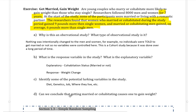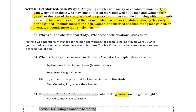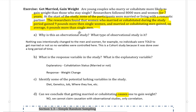Can we conclude that getting married or cohabitating causes one to gain weight? The answer is a concrete no — we cannot claim causation with observational studies. We can only claim correlation. All we can say is that there's a connection between cohabitation status and the amount of weight gained or lost. If they had controlled more and made it an experimental study — theoretically telling some individuals to get married and others not — then you could possibly claim causation. But with observational studies, we cannot do that.